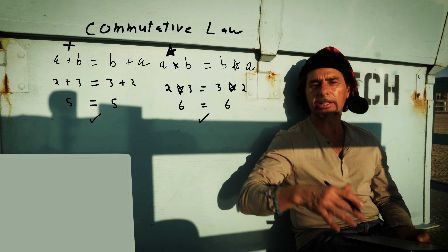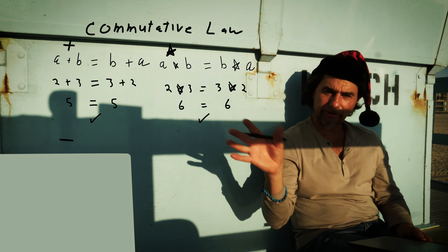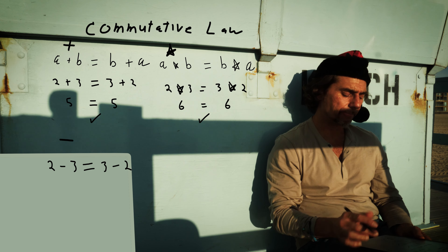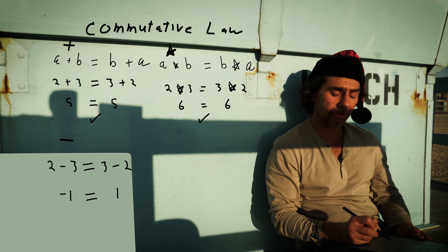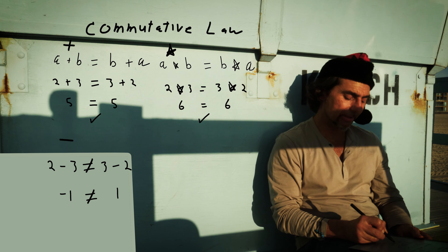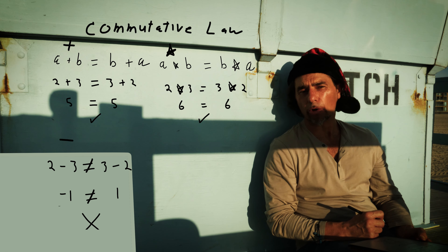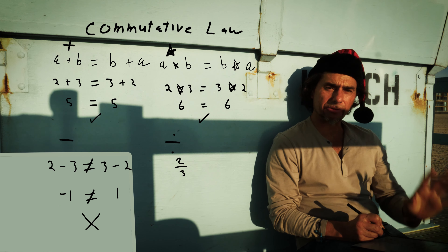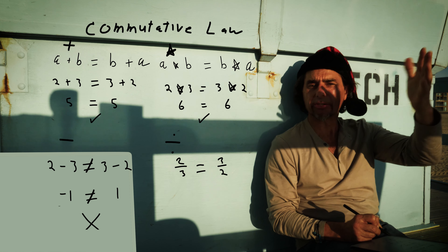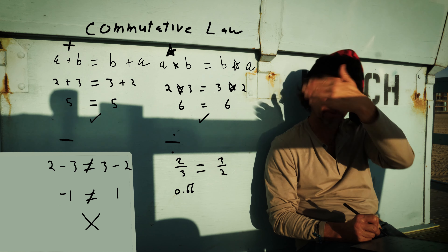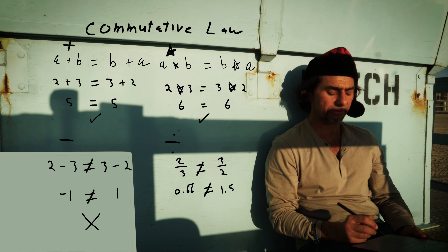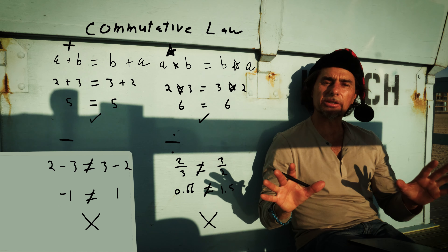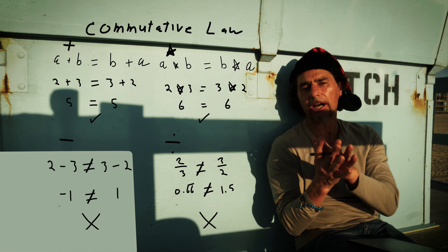Now let's look at the cases for subtraction and division and see what happens. 2 minus 3 — we'll assume — equals 3 minus 2. Let's check it: 2 minus 3 is negative 1, and 3 minus 2 is 1. Negative 1 does not equal 1, so the commutative property does not hold over subtraction. Now division: 2 over 3 — we assume — equals 3 over 2 if the law holds. 2 over 3 is 0.6666 repeating, and 3 over 2 is 1.5. Clearly they're not equal, so the commutative law does not hold over division either.